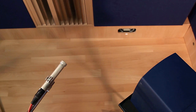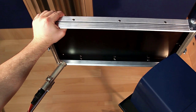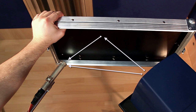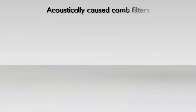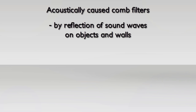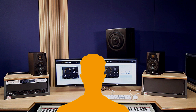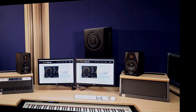Also keep in mind that comb filters occur in other situations. This is an example of an acoustically caused comb filter. It's caused by the time delay produced by acoustical reflections. These kind of comb filters are present in every recording session and can only be reduced by acoustical treatment and good microphone placement. In your control room, acoustical comb filters occur caused by the reflection of monitor sound on your desk. So even in your control room, it's a good idea to check different setups for comb filtering issues.